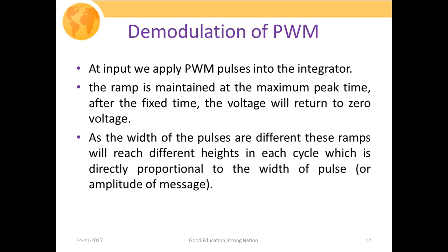Now we discuss how to demodulate the pulse width modulated waveform. We apply the PWM pulses to an integrator, which integrates the incoming PWM pulses. Since PWM waveforms are flat pulses, integrating them produces a ramp. That ramp is maintained at the maximum peak time, then after a fixed time the voltage returns to zero. Since the widths of pulses are different, these ramps reach different heights in each cycle, which is directly proportional to the pulse width or amplitude of the message signal.